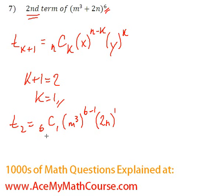Great. Sorry, 6C1 is just going to be equal to 6, because every time we have a combination nC1, that's just going to be equal to n. So 6C1 is just 6.